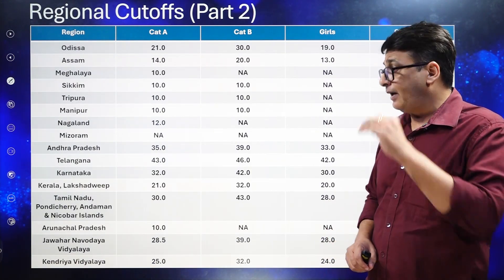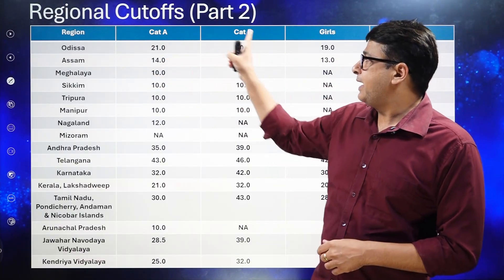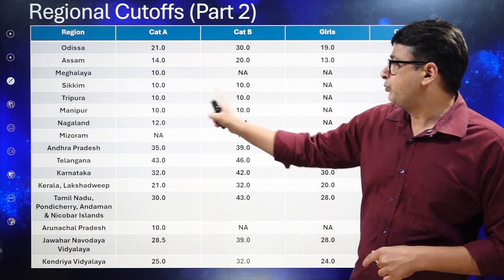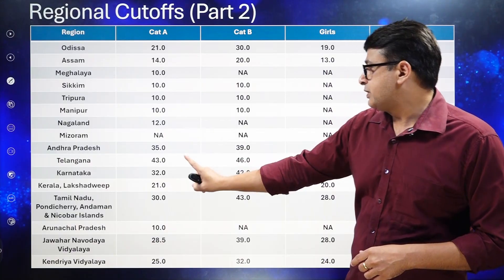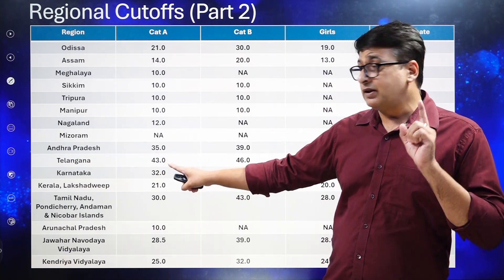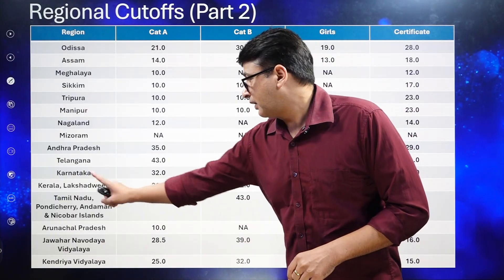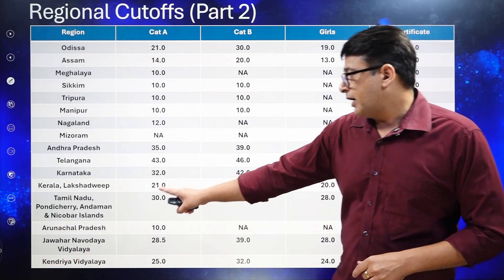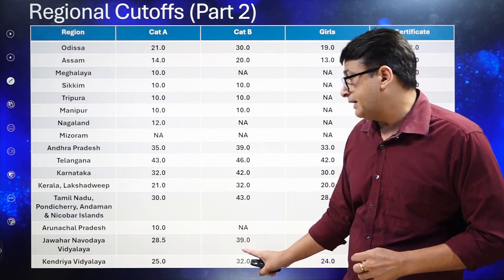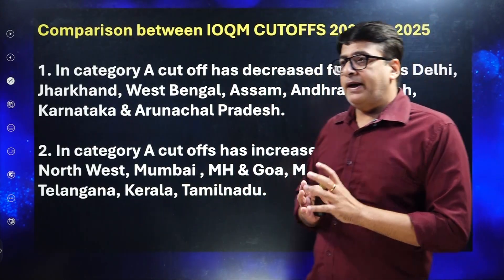From Odisha: Category A 21, Category B 30. Assam: Category A 14, Category B 20. Meghalaya: Category A 10, Category B not eligible. Sikkim: 10 and 10. Tripura: 10 and 10. Manipur: 10 and 10. Nagaland: 12. Mizoram did not participate in IOQM 2025. Andhra Pradesh: 35 and 39. Telangana has the highest cutoff across all regions: Category A 43, Category B 46. Karnataka: 32 and 42. Lakshadweep: 21 and 32. Tamil Nadu, Pondicherry, and Andaman & Nicobar: 30 and 43. Arunachal: 10. Navodaya Vidyalaya: 28.5 and 39. Kendriya Vidyalaya: 25 and 32.